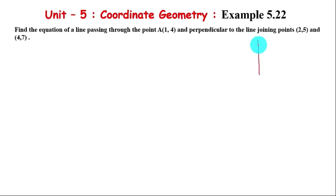The required line is perpendicular to the line segment joining (2,5) and (4,7). The line is perpendicular, forming 90 degrees.